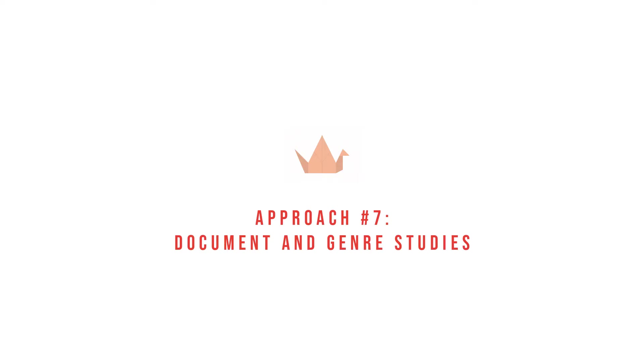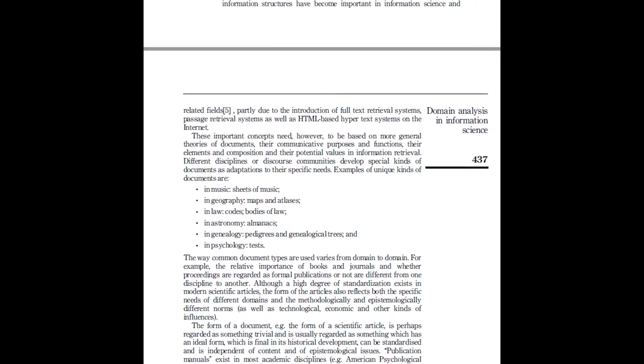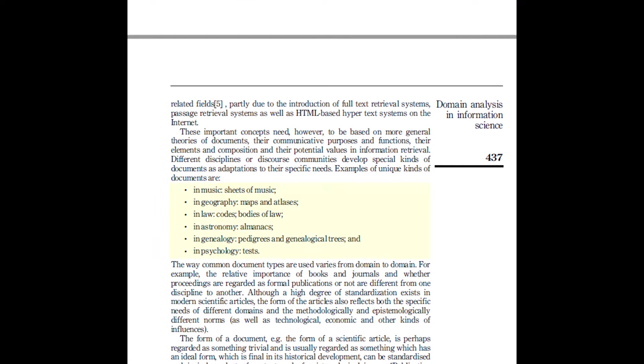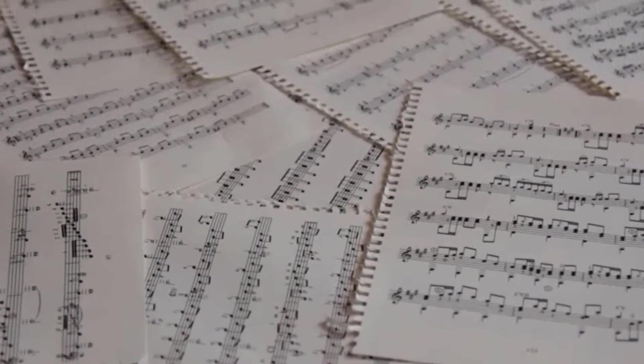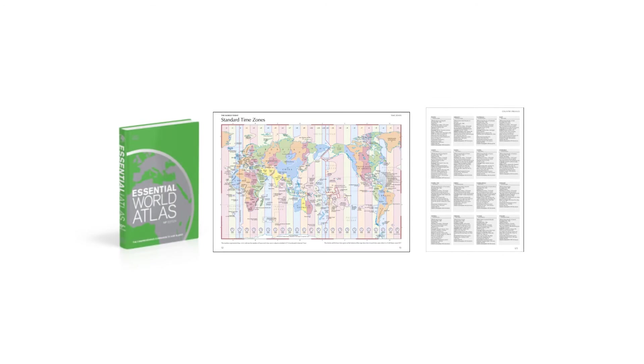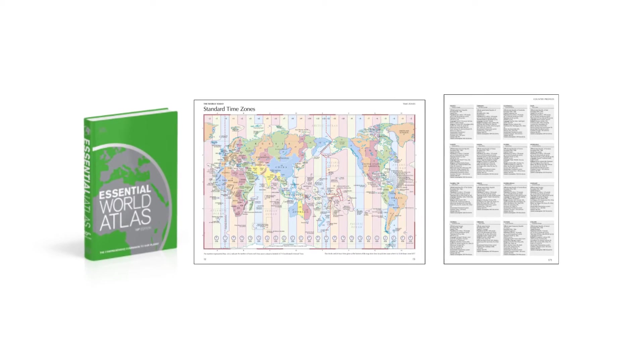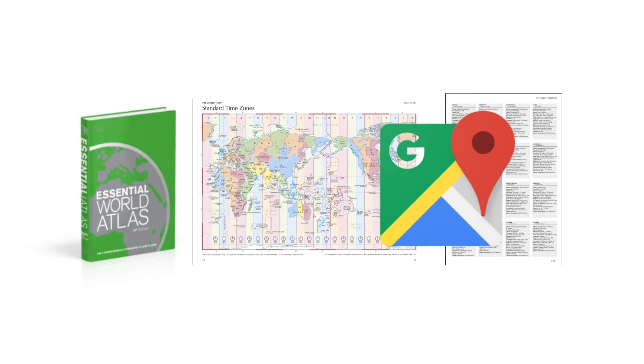Domain analysts could also conduct document and genre studies. To open this section, Hjørland lists unique kinds of documents that emerge within domains. For instance, in music, there is sheet music, and in geography, there are maps and atlases. Hence, an important approach in domain analysis is to identify and analyze these documents and genres with attention to their defining characteristics, their uses, and histories.